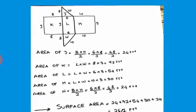Triangle J is the top triangle. The area of J equals base times height divided by 2. The base equals 6 and the height equals 8, so 6 times 8 equals 48, divided by 2 equals 24. Since J and N are equal triangles, the area of N is also 24.